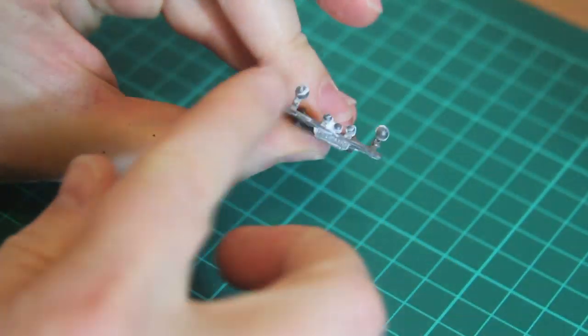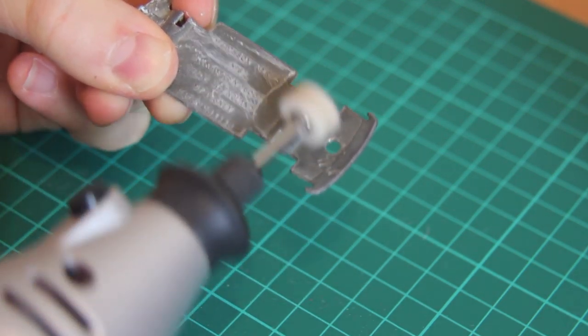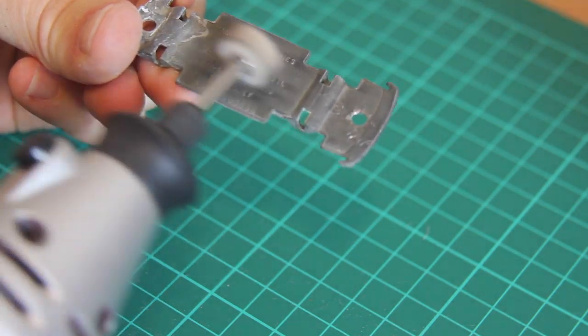Next I apply some of the Autosol metal polish to the base and then use a buffing attachment to clean it all off.